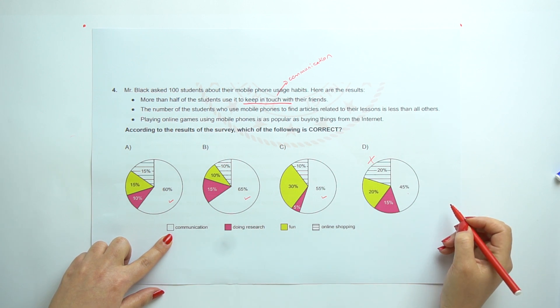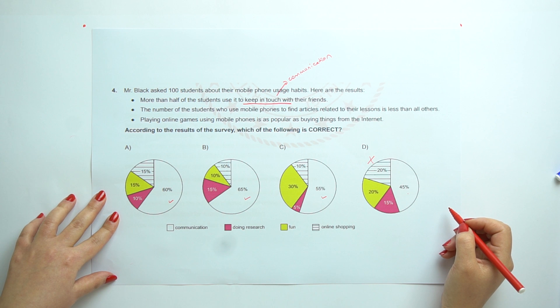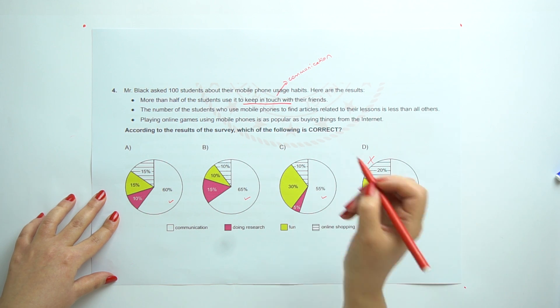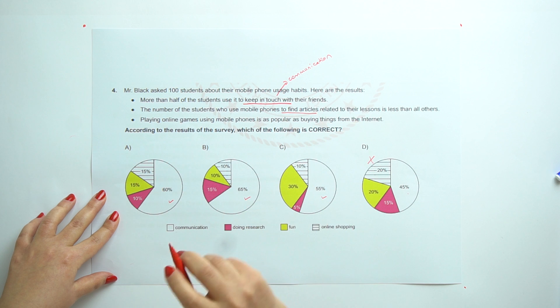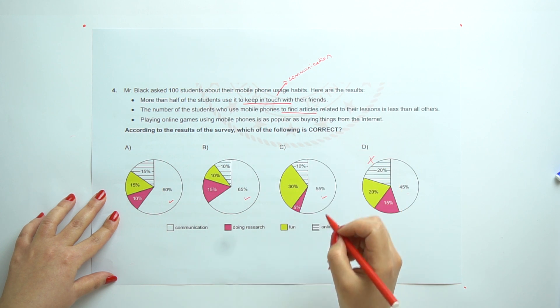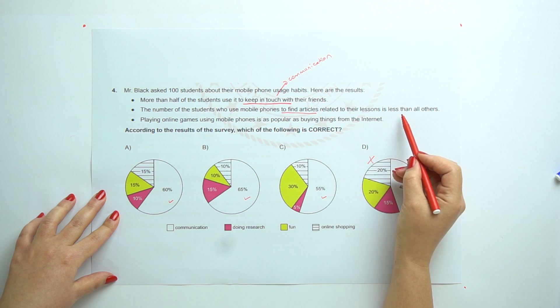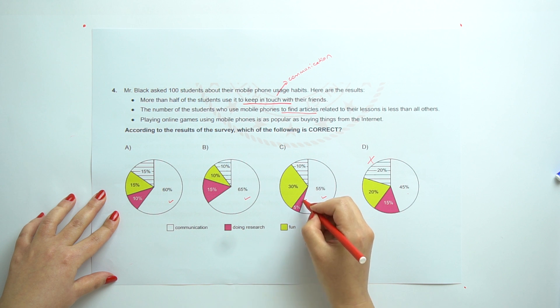The number of the students who use mobile phones to find articles related to their lessons is less than all others to find articles. This is about the doing research. So, less one. It must be less than all the others. So, we can say this one. This is the least one. And we cannot say this. So, we eliminate this one.